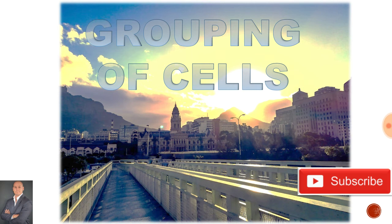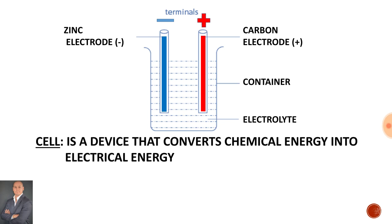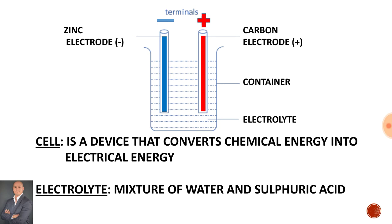Welcome to N4 Electro-Techniques. In this lesson we'll be looking at grouping of cells. Here we have a container with electrolyte solution and a chemical reaction is taking place between two plates — a negative electrode made of zinc and a positive electrode made of carbon. A cell is a device that converts chemical energy into electrical energy. The electrolyte solution is a mixture of water and sulfuric acid.